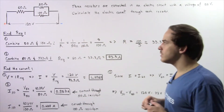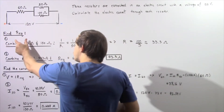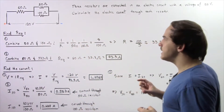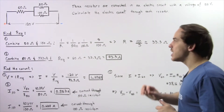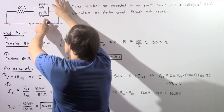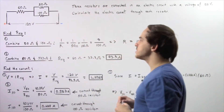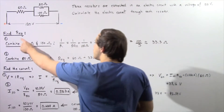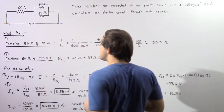Let's begin with step one — we want to find the equivalent resistance. We'll start by calculating the resistance that will replace the two resistors placed in parallel with respect to one another. So we want to combine the 50 ohm and the 100 ohm resistors.